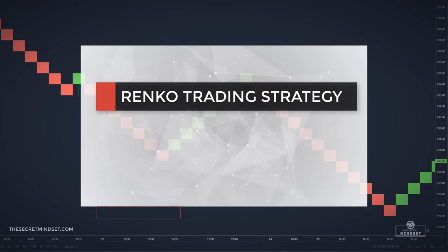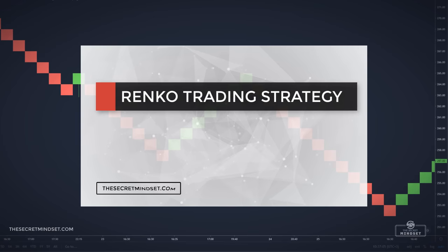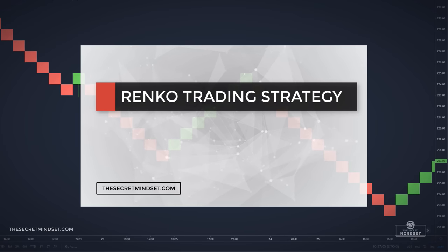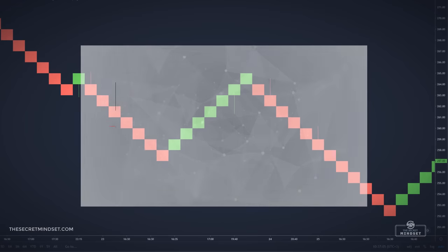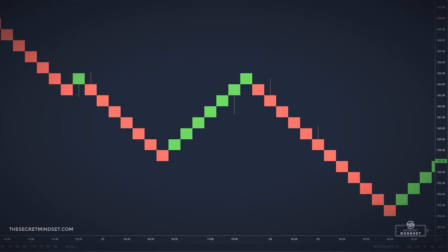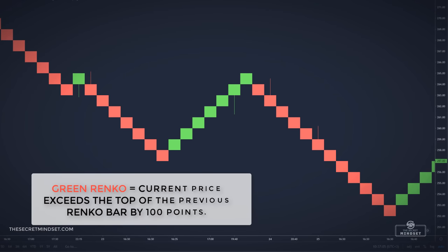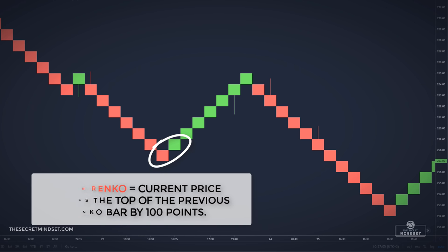Now, enough with the theory — let's dive right into a simple Renko strategy. For this setup, I use a 100-point Renko brick. A new green Renko bar forms only after the current price exceeds the top of the previous Renko bar by 100 points.